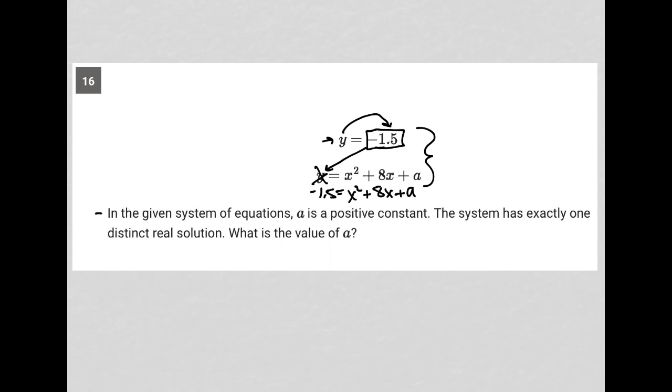Let's read the actual question. It says in the given system of equations, a is a positive constant. The system has exactly one distinct real solution. What is the value of a? So really the hint here is this statement: the system has exactly one distinct real solution. So anytime I see the terms real solution on this test, I'm immediately thinking about the discriminant.